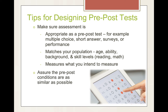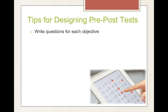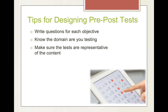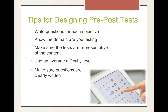Assure that the pre- and post-test conditions are as similar as possible. They should be able to complete this in about 10 to 25 minutes. Be sure to write questions for each objective to make sure that you've covered everything you intended to cover. Know which domain you're testing. Make sure that the tests are representative of the content. Use an average difficulty level. Make sure that the questions are clearly written. You want to avoid any gender, cultural, and age bias in your questions.